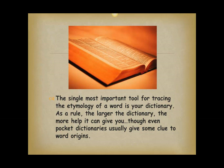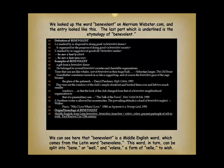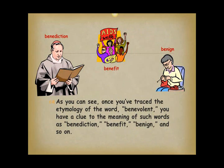The single most important tool for tracing the etymology of a word is your dictionary. As a rule, the larger the dictionary, the more help it can give you, though even pocket dictionaries usually give some clue to word origins. We looked up the word benevolent on merriamwebster.com and the entry showed that benevolent is a Middle English word which comes from the Latin word benevolent. This word can be split into bene, meaning well, and volens, a form of vele, meaning to wish. Once you've traced the etymology of benevolent, you have a clue to the meaning of such words as benediction, benefit, benign, and so on.